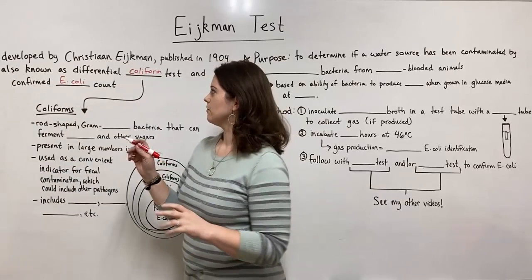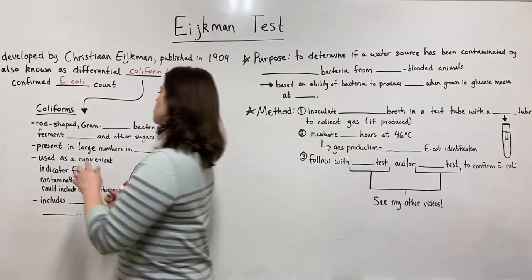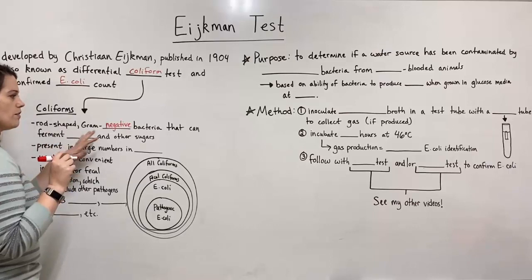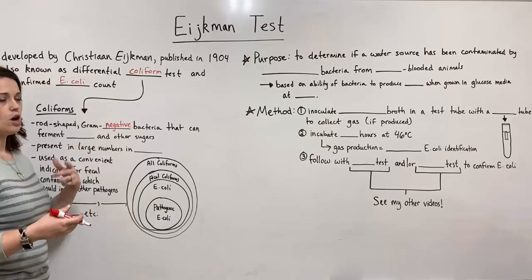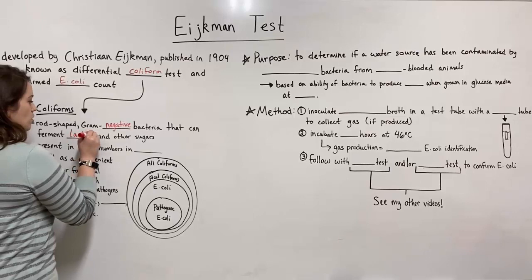Before we jump into the purpose and methods of the Eijkman test, I just want to remind you what we mean by coliforms. Coliforms are rod-shaped bacteria, so bacillus shaped. They are gram negative — if you need a reminder of the difference between gram positive and gram negative cell walls, please check out my video on gram positive versus gram negative bacteria. Coliforms are rod-shaped, gram-negative bacteria that can ferment lactose and other sugars, and they're present in large numbers in feces.